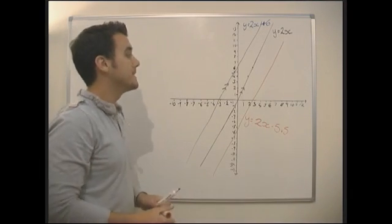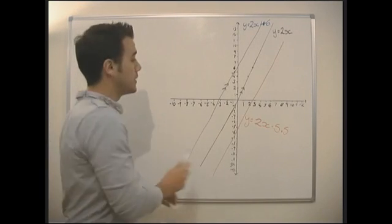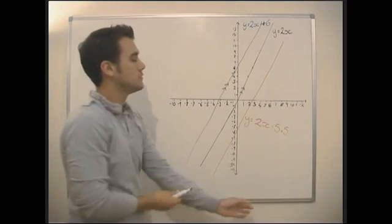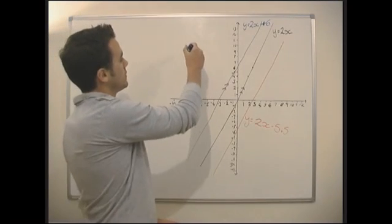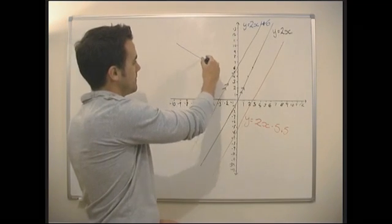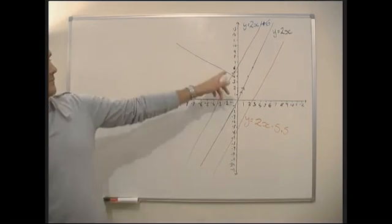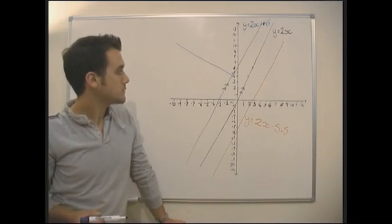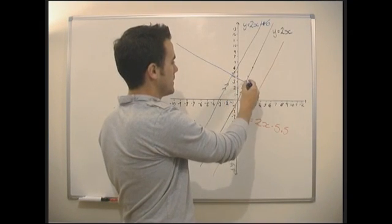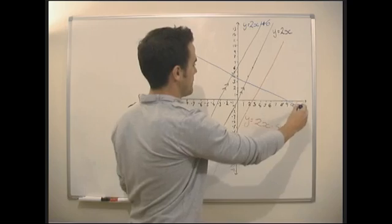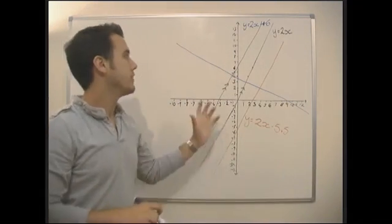And what about a perpendicular line? So now I'm going to draw a line that is perpendicular to this one, so the y equals 2x plus 6. So by perpendicular, I mean that it meets it at 90 degrees. It's going to meet there at 90 degrees.